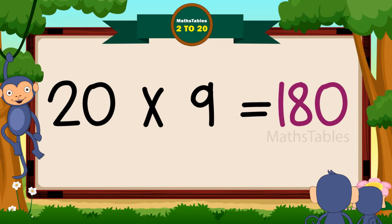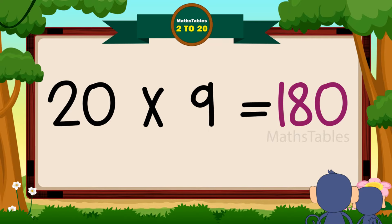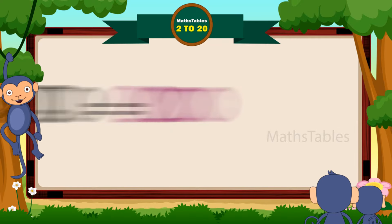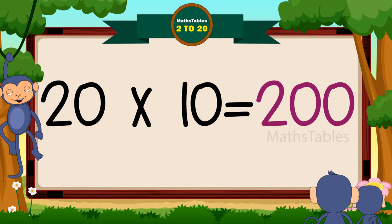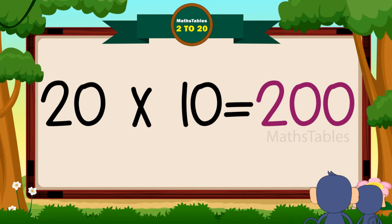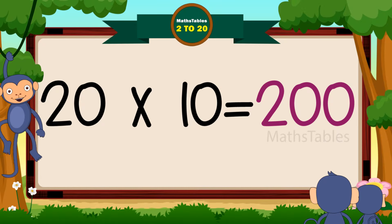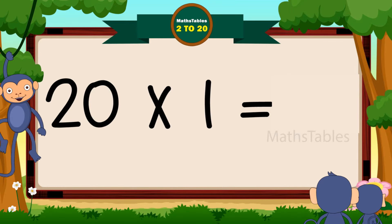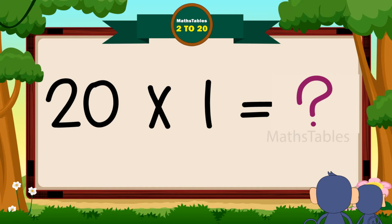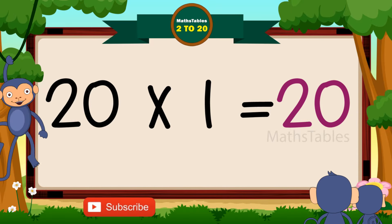2 9's are 180, 2 9's are 180. 2 10's are 200, 2 10's are 200. 2 1's are 20, 2 1's are 20.